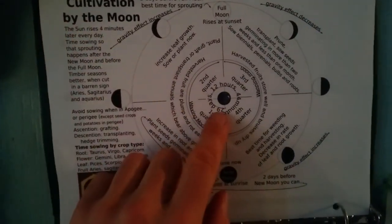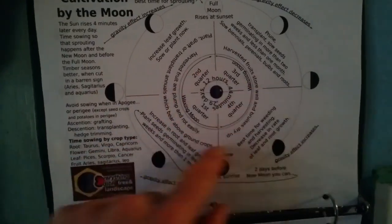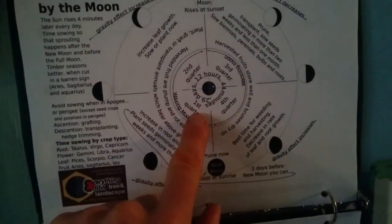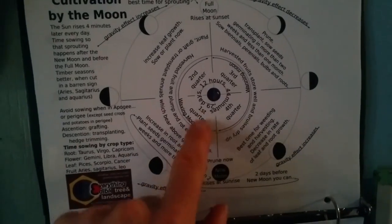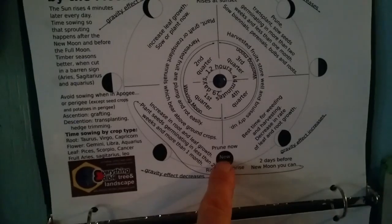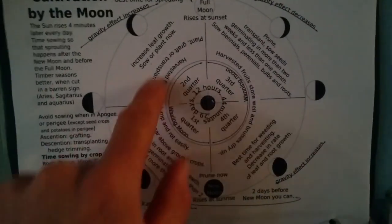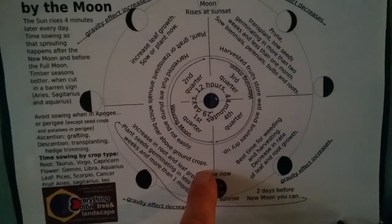These are notes from Ruth Stout I learned at the Linnea Farm gardening program. Here it talks about 29 days, 12 hours, 44 minutes for the moon to do a complete phase from first quarter, second quarter, third quarter, and fourth quarter back to new moon. Here's the new moon. This calendar shows what kind of cultivation things we can be doing.